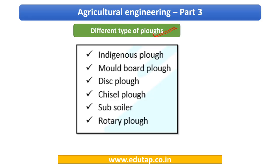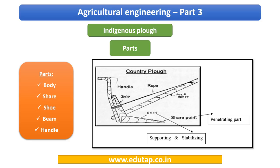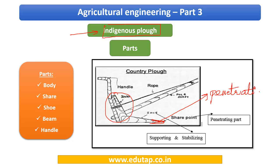The types of plows used as primary tillage implements are: the indigenous plow (also called country plow), the moldboard plow, disc plow, chisel plow, subsoiler, and rotary plow. The indigenous plow has a body, a share — the pointed end used for penetration — and a shoe, which is a supporting part that stabilizes the share as it penetrates the ground. Other parts include the beam and a handle, since it is manually operated.